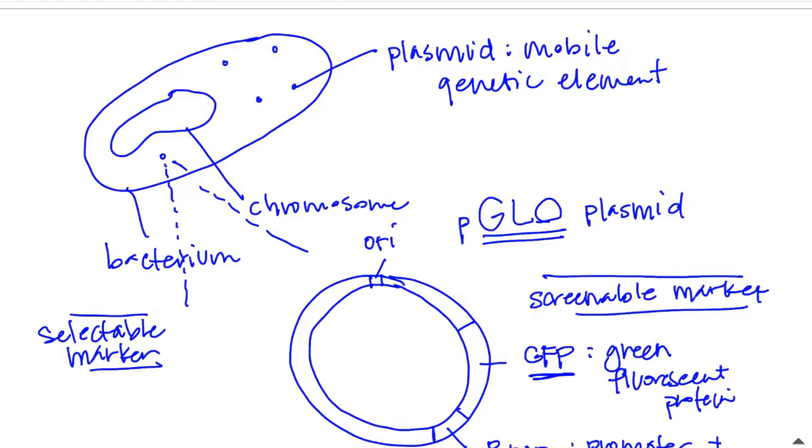Now, the other thing that is on the P-glo plasmid is something called a selectable marker or a different type of reporter gene that's called a selectable marker. And in the case of the P-glo plasmid, this is the BLA gene. And the BLA gene codes for antibiotic resistance. Now antibiotic resistance is taken from another bacteria cell. It's just from another organism.